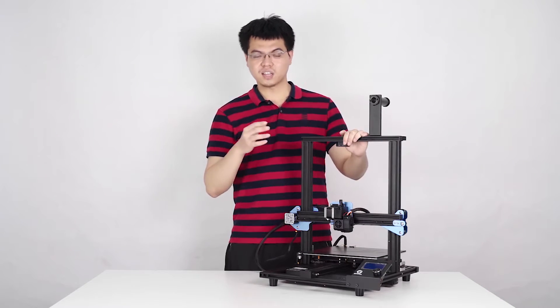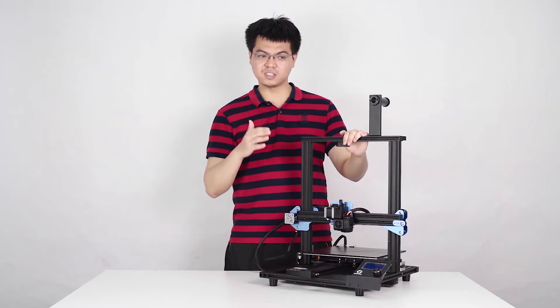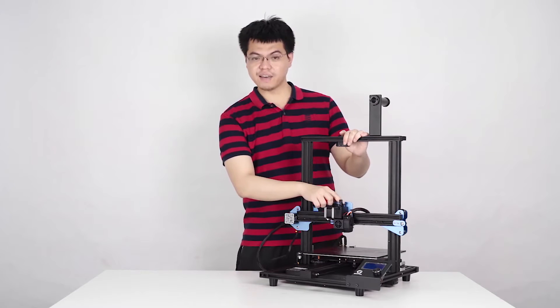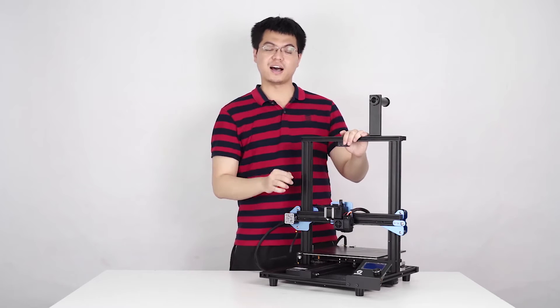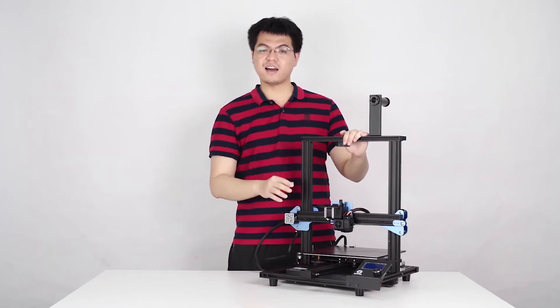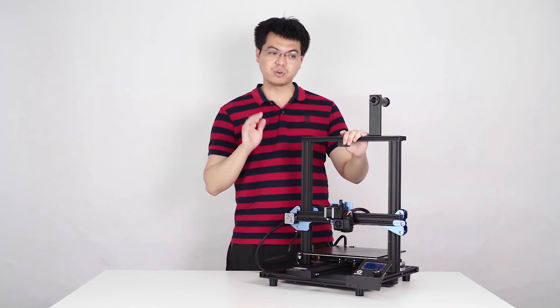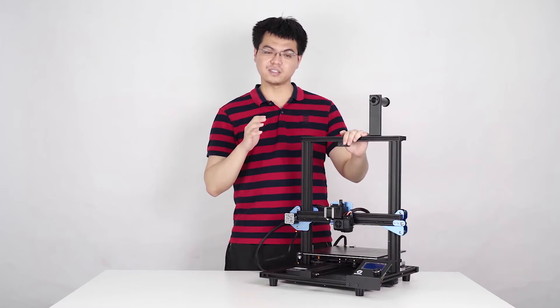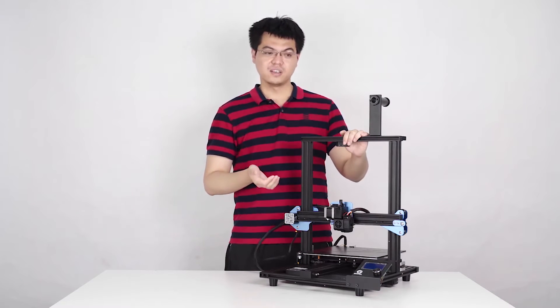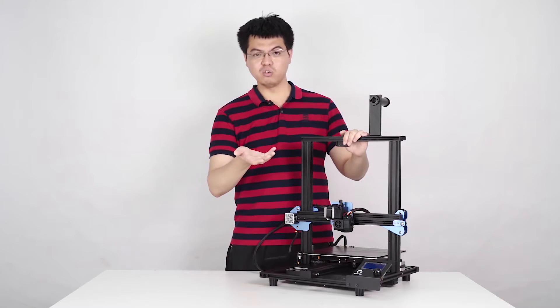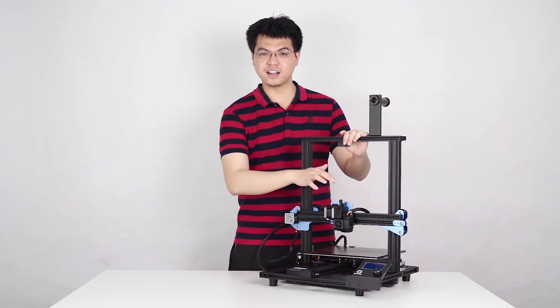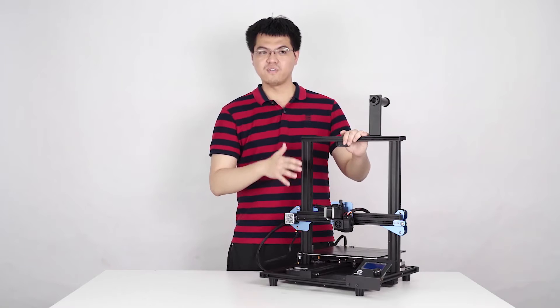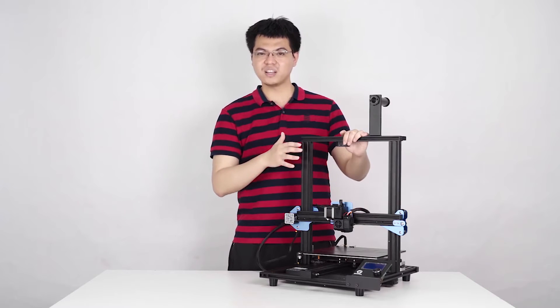With the new PTFE tube upgraded in this new Extruder Kit, it's much easier for you to print with soft materials like the soft filaments, like TPU. Why? Because the tube makes it much easier to fit the filament. So those are the three main benefits you can receive from this new upgraded Extruder Kit.